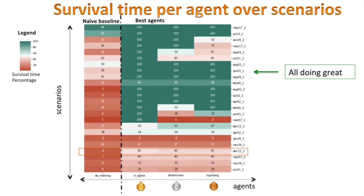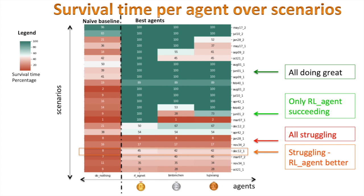We see that for some scenarios, the row for best agents is green, which means they all succeeded, managing the whole weekly scenario. For some scenarios, only the best agent succeeds. For some other scenarios, they all struggle the same way. For some interesting scenarios, they all struggle, but the best agent is yet surviving more time, like over the December scenario number one. We'll hence investigate this interesting one in the following.